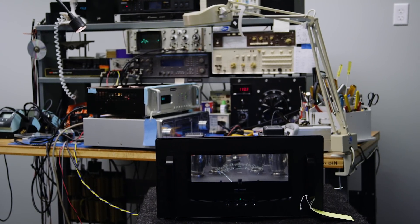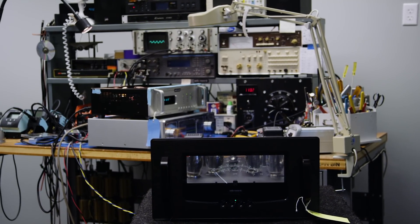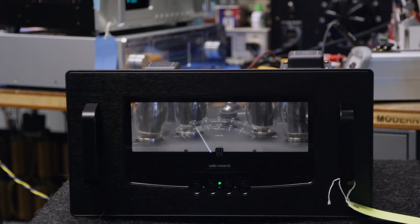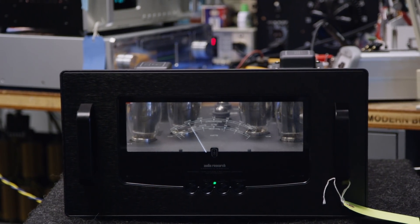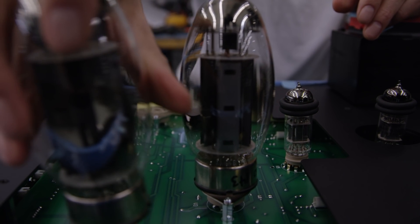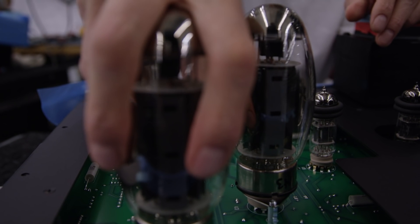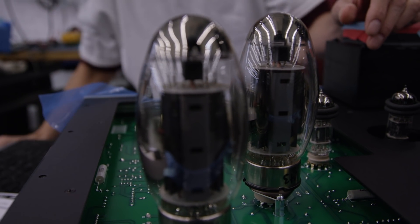The power output of the Ref 160M is roughly 140 watts RMS in ultralinear mode and roughly 70 watts RMS in triode mode. The output tubes are KT150s. Right now in the audio industry, virtually everyone prefers the KT150 and we've optimized the sound around that tube.